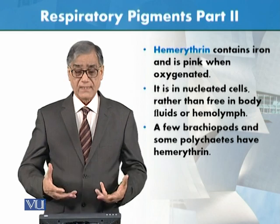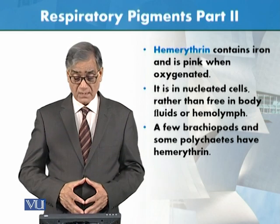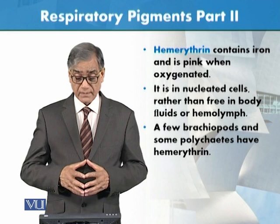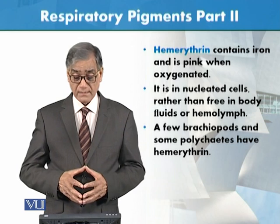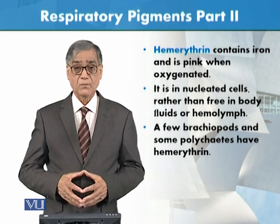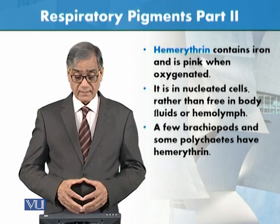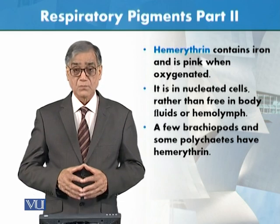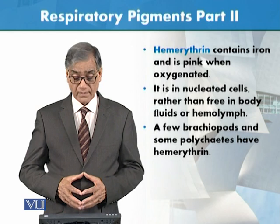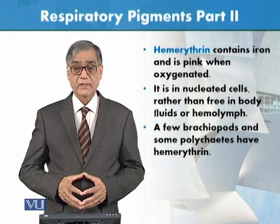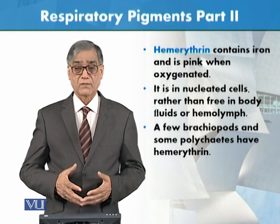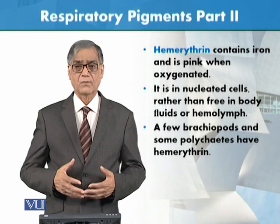Next is the third respiratory pigment, which contains iron and is pink when oxygenated. It is found in nucleated cells rather than free in body fluids or hemolymph. Here, nucleated cells means red blood cells which are nucleated, and these are found in invertebrates.